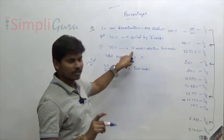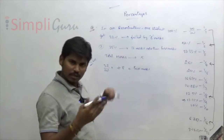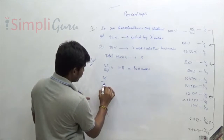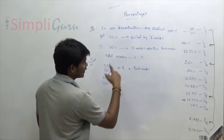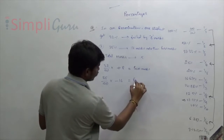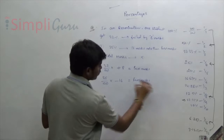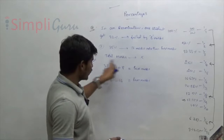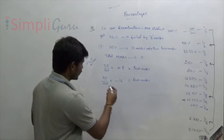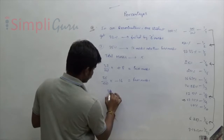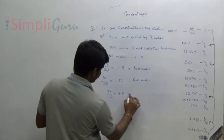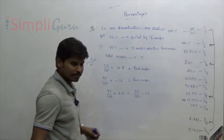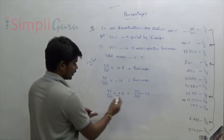The second student got 35% and got 16 marks more than the pass mark. So if you subtract 16 marks from what he got, that is also equal to the pass mark. So we can equate these two expressions: 32/100 × X + 8 = 35/100 × X − 16.